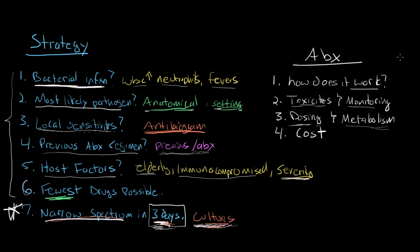While discussing strategy, it's worth going over a few key points about antibiotics whenever you're prescribing them. First, do you know how your antibiotic actually works? It's good to know. Second, does your drug have any toxicities and should it be monitored? For example, vancomycin can become toxic if too highly dosed, and we often do vancomycin troughs to monitor dosing. Third, consider dosing and metabolism — you need to know how the drug is dosed, and if your drug is renally excreted and your patient is in renal failure, you may need to adjust your dosing.